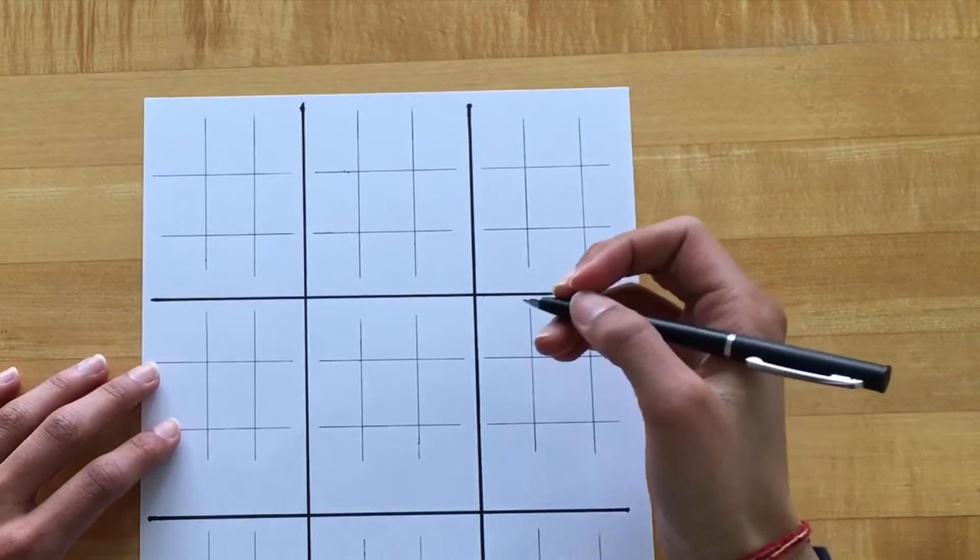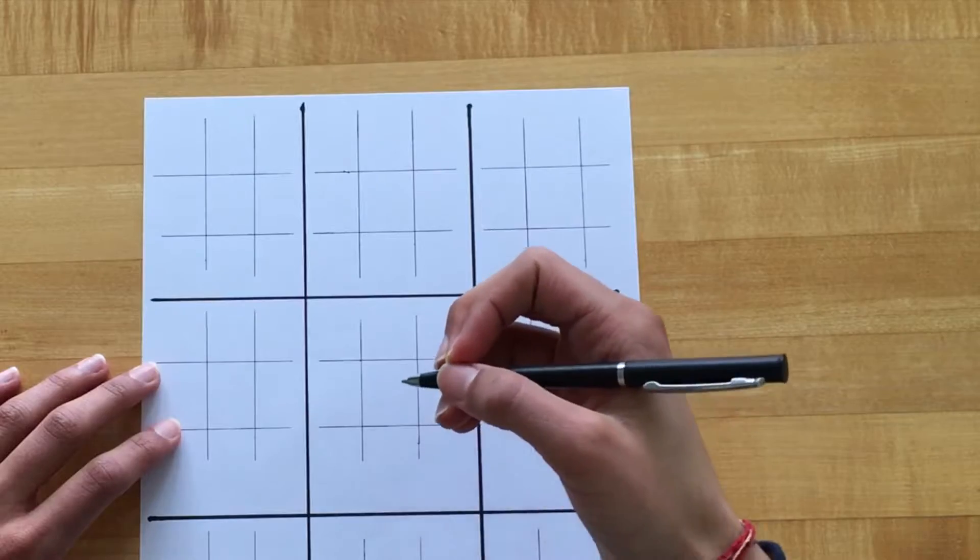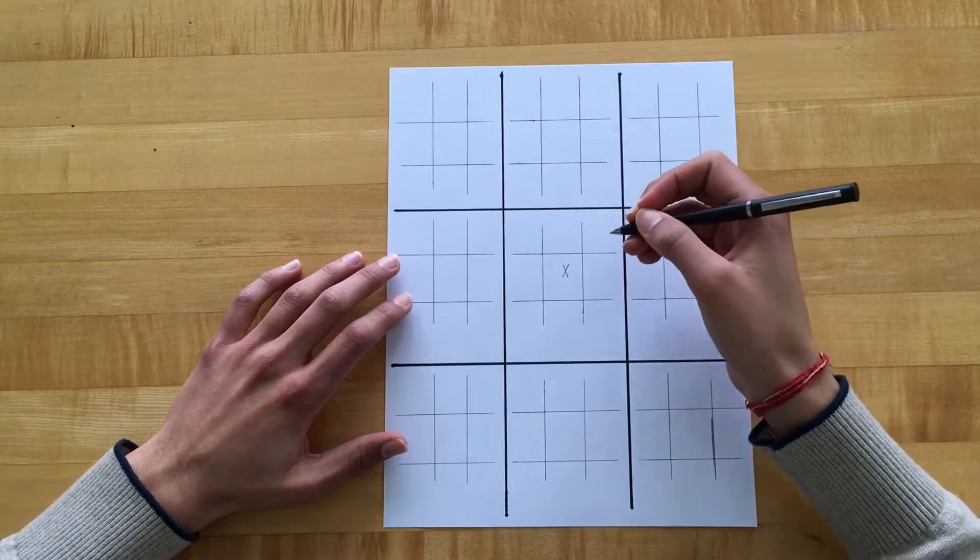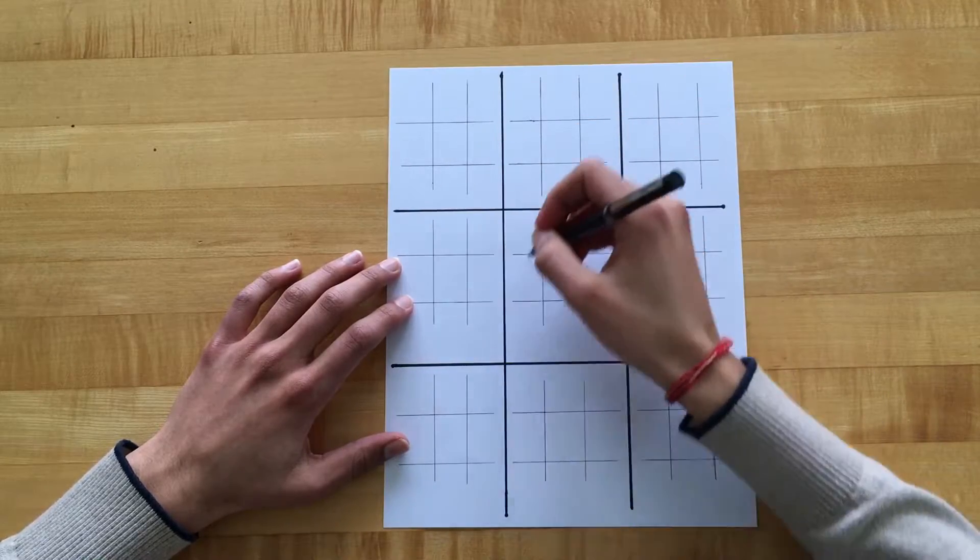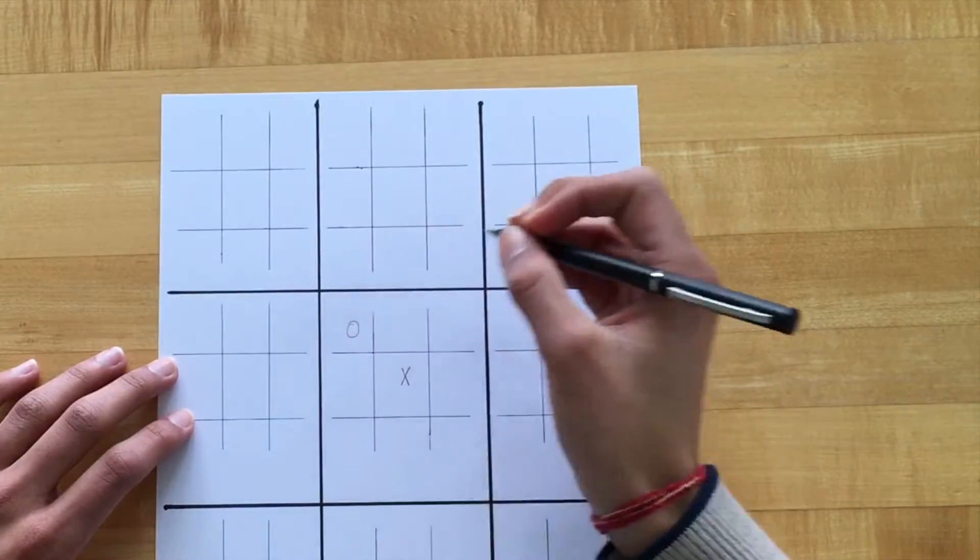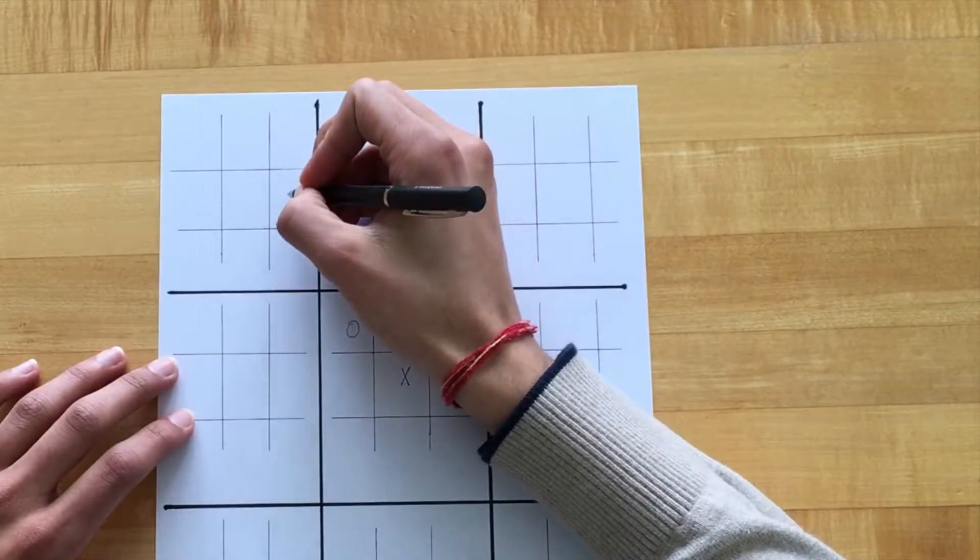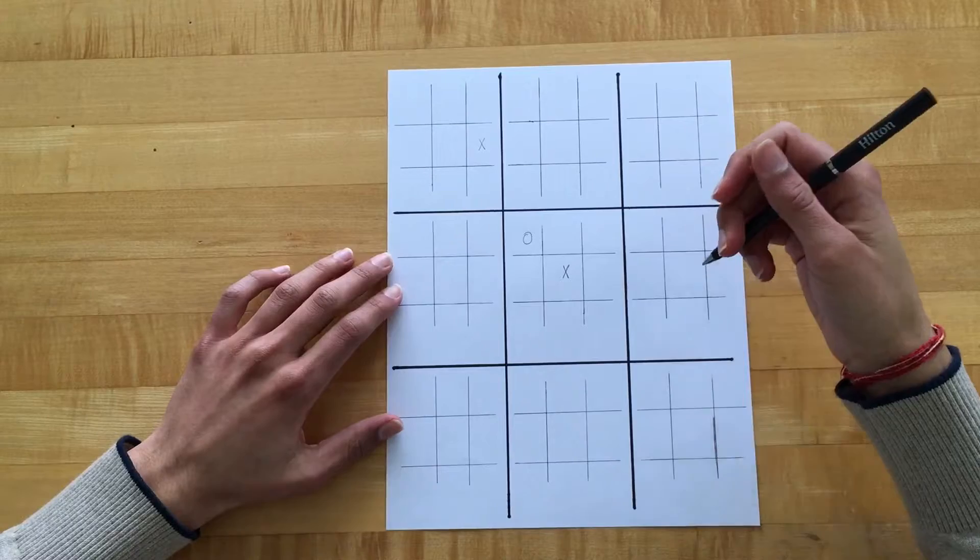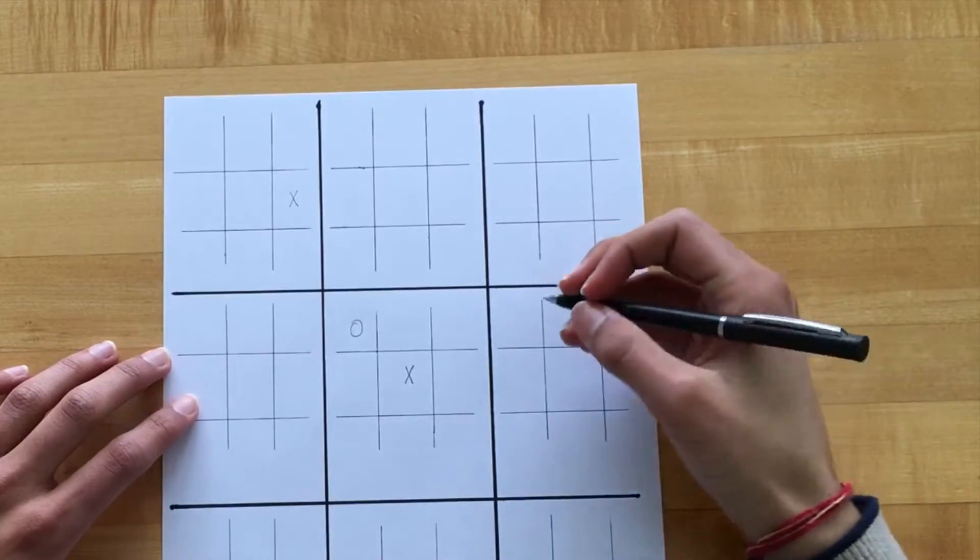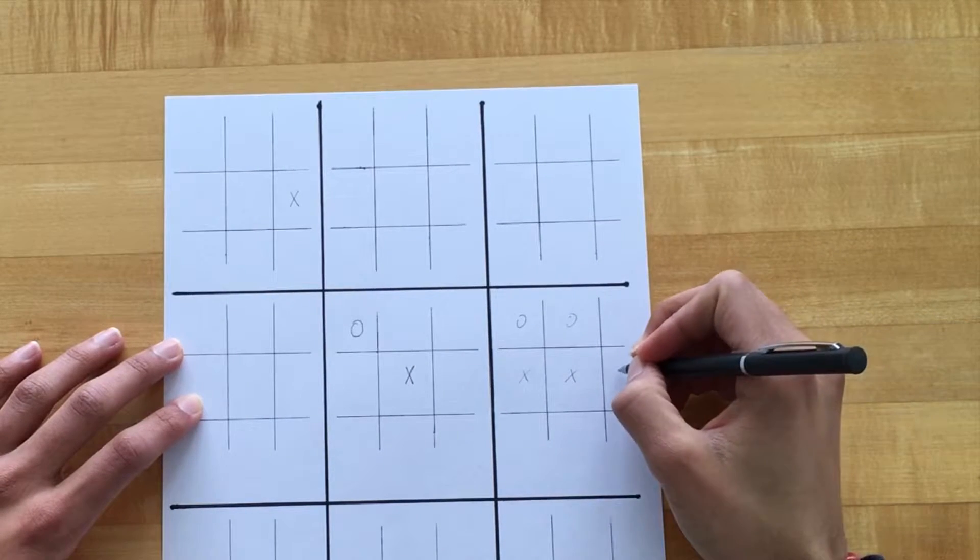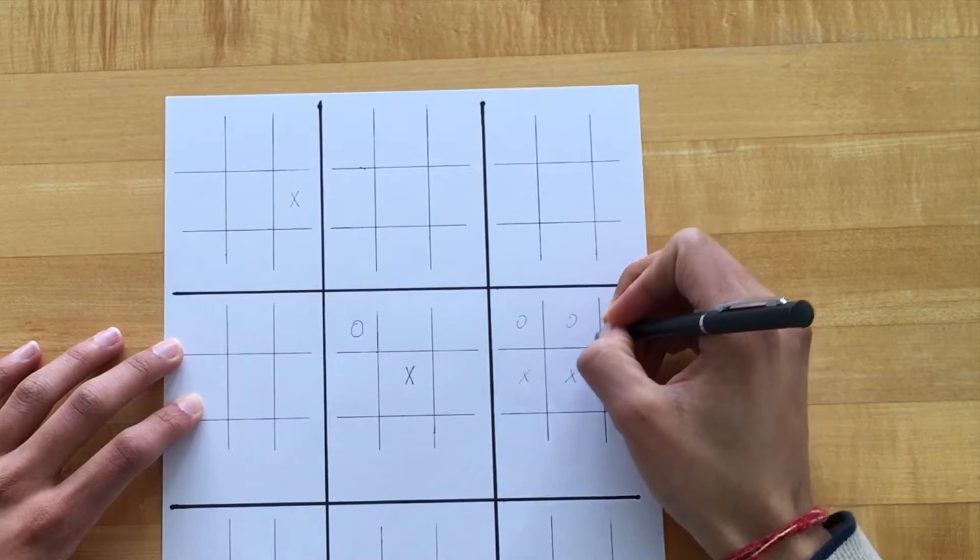So for example, let's say X starts and X plays in the middle first. That means that O can only play on the middle board. So let's say O plays here. Now X has to play on this board. This keeps going until someone wins an entire board. So let's say this board, there's already some stuff here and X places here. So now they won the entire board.